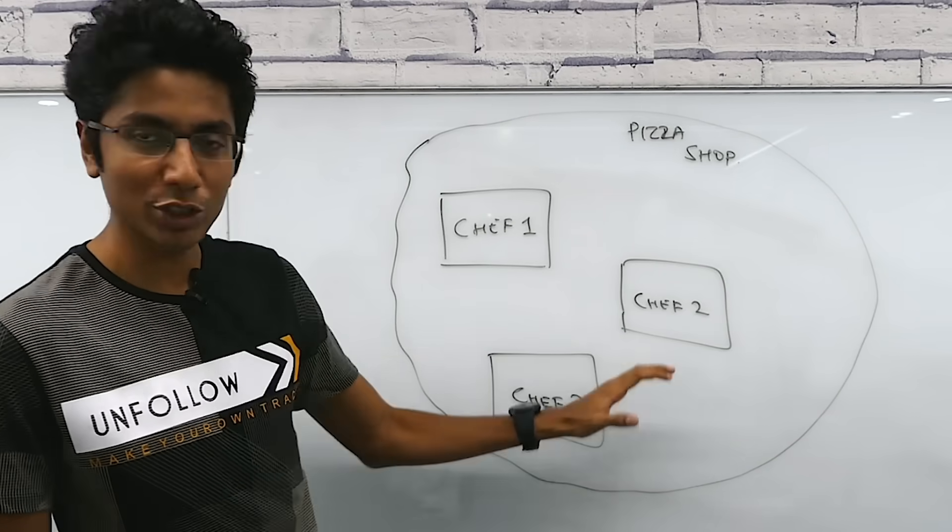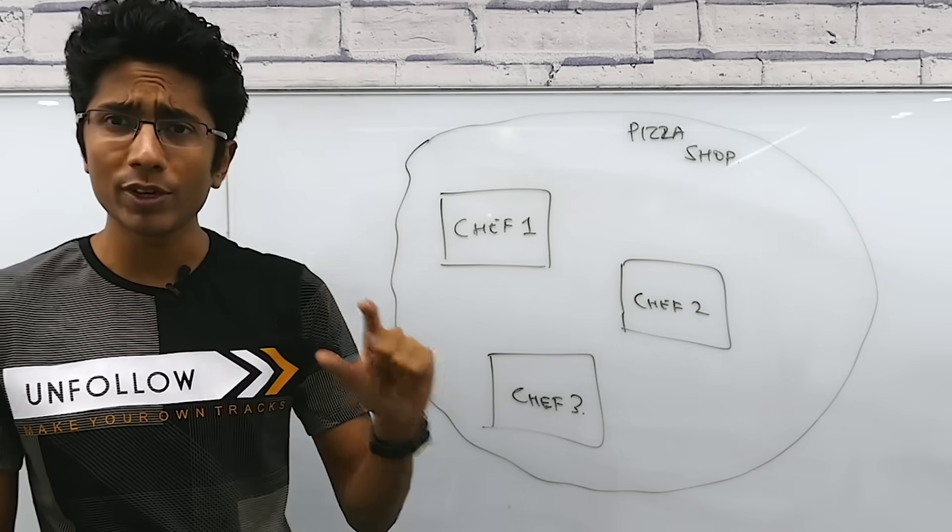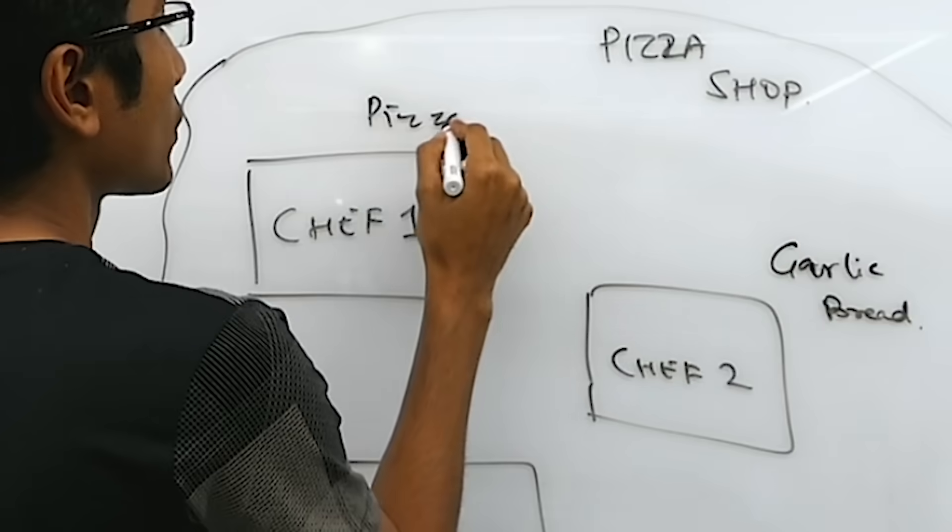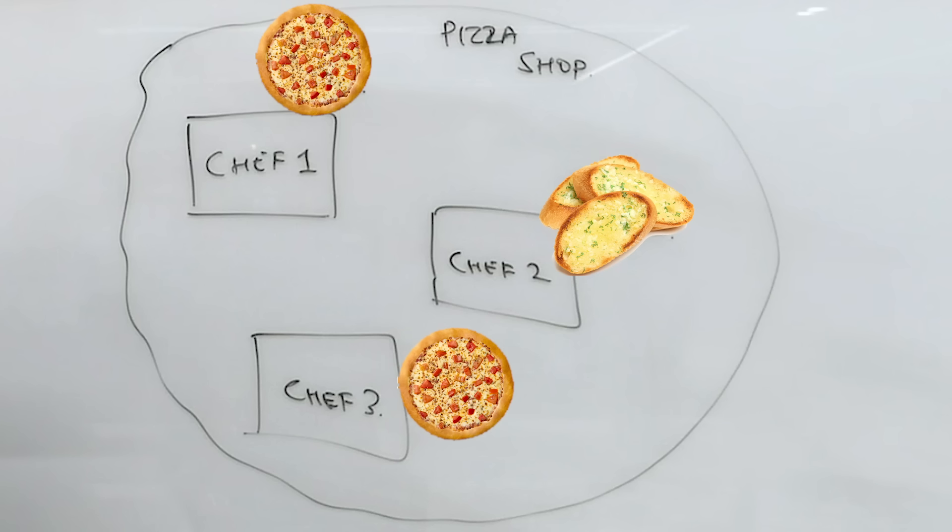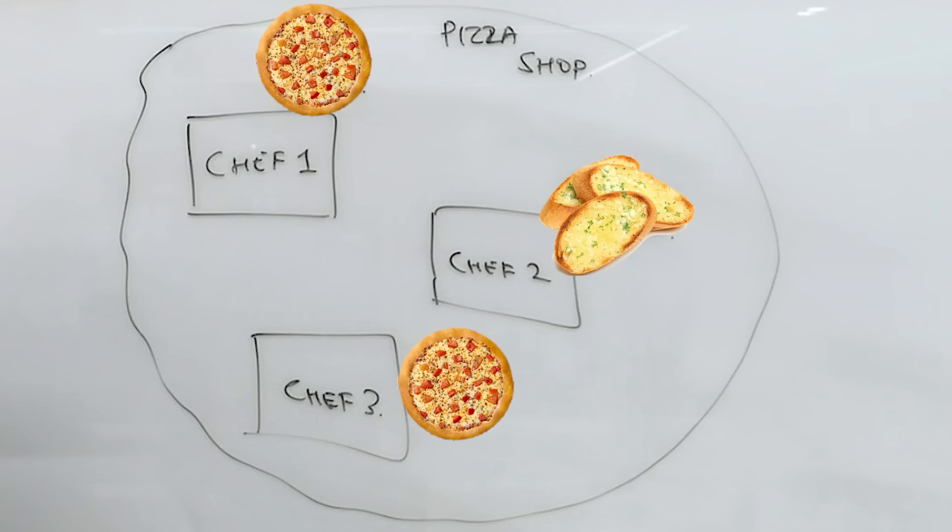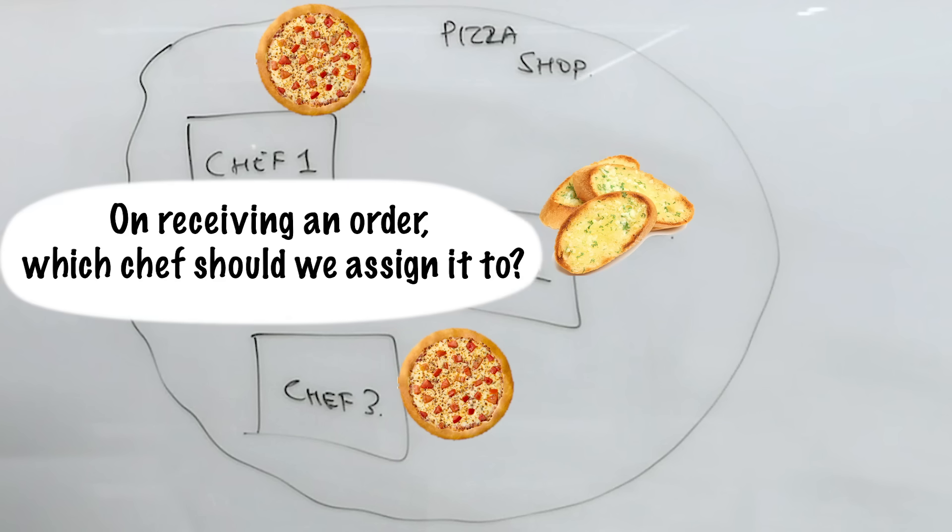Let's say we have three of our chefs over here, one, two and three. They have some specialties. Here's a question. You have chefs one and three who are experts at making pizzas and chef two's expertise is garlic bread. If you have two types of incoming orders, which is pizza and garlic bread, how would you route them?